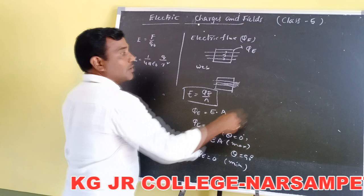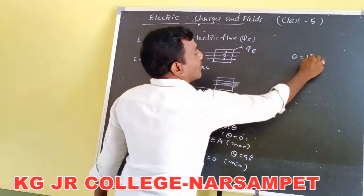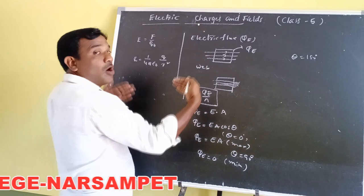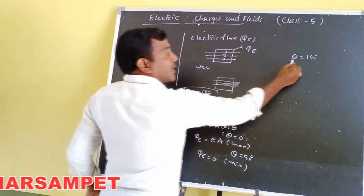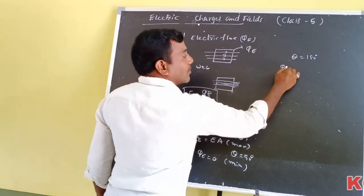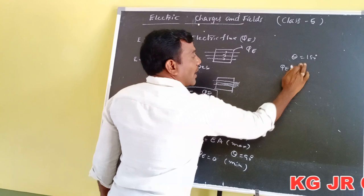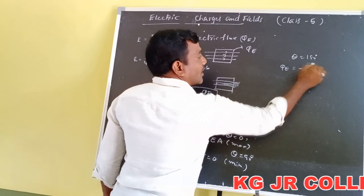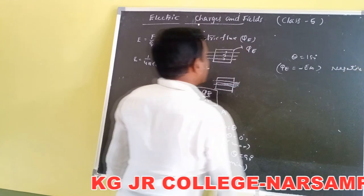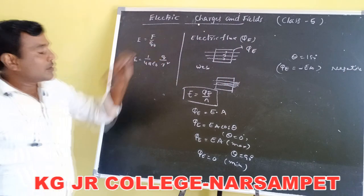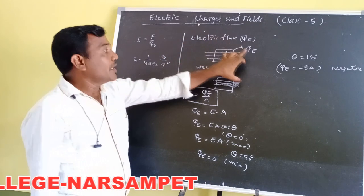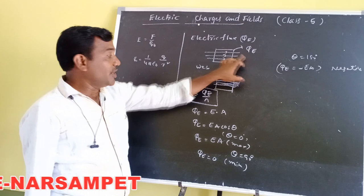When θ = 180°, the area direction and electric field direction are opposite to each other. Then cos 180 = −1, so φ = −EA — this is the negative value. To summarize: the number of electric lines of force passing through a unit area is called electric flux, with units of newton·meter²/coulomb.